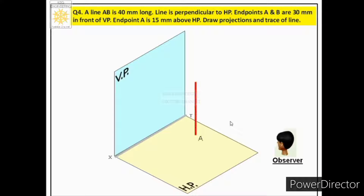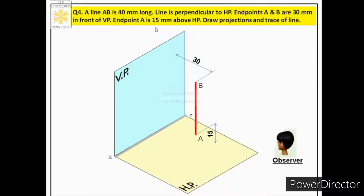Now let us place the line. We have line AB, and it is perpendicular to HP as stated. Both endpoints A and B are at 30 mm in front of VP, and endpoint A is 15 mm above HP. So this is case 4, where the line is parallel to the vertical plane and perpendicular to the horizontal plane.